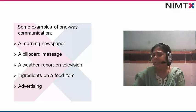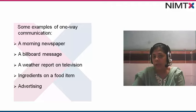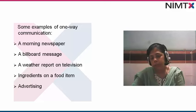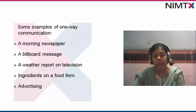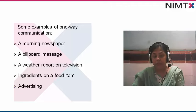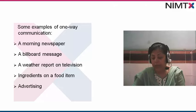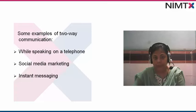A billboard message — we see advertising messages and billboard messages on every road. That is a one-way communication from the manufacturer, from the organization to us consumers. Similarly, a weather report on television, or the ingredients on a food item. When you take any food item, you see the ingredients — they are communicating to you how this food is to be cooked, but we cannot give feedback. Advertising, as I said, is also one-way.